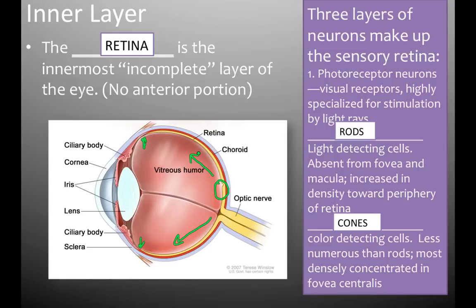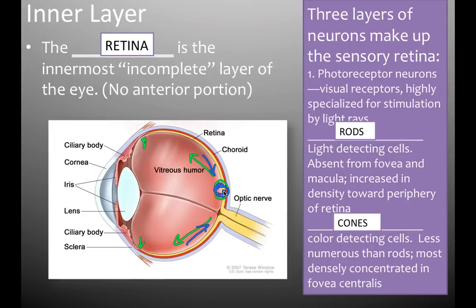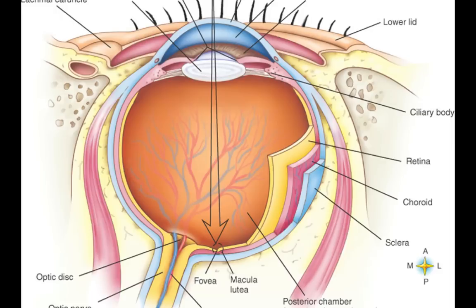Cones are our color detectors, while rods are our light detectors. Cones are less numerous than rods, but as you go towards the fovea, the concentration of cones increases — at the fovea you have nearly 100% cones. So in that small area you have a great deal of visual acuity and color perception, whereas moving out into the periphery of the retina is more about light detection. Rods can detect very small amounts of light in dark areas.